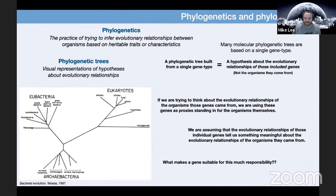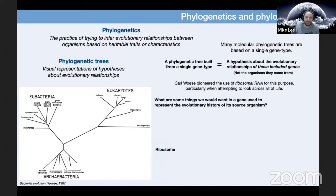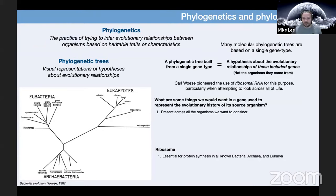That's a lot of responsibility for a gene. When Woese was thinking about this, he championed the use of ribosomal RNA, particularly when trying to look across all of life. One thing we would want in a gene used to represent evolutionary history is that it be present in all the organisms we're comparing. The ribosome is essential for protein synthesis in all known bacteria, archaea, and eukarya — essential in the biological sense that these things can't survive or propagate without it functioning properly.